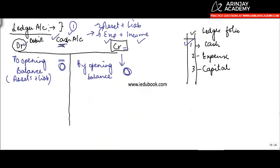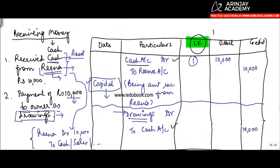The way it reads is: cash account debited to Rena account, 10,000. So you read it in a sequential manner. Cash account debited to Rena account—that's how you do the posting. Whereas if you see the second one, it says drawings account debited to cash. Now cash over here is credited.